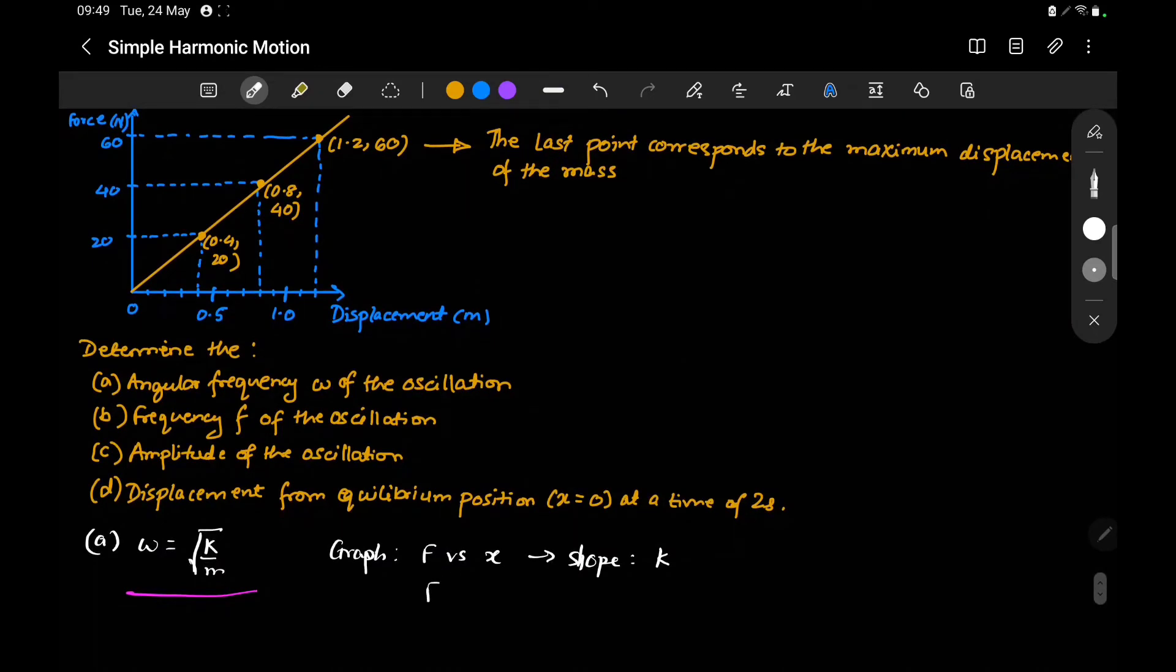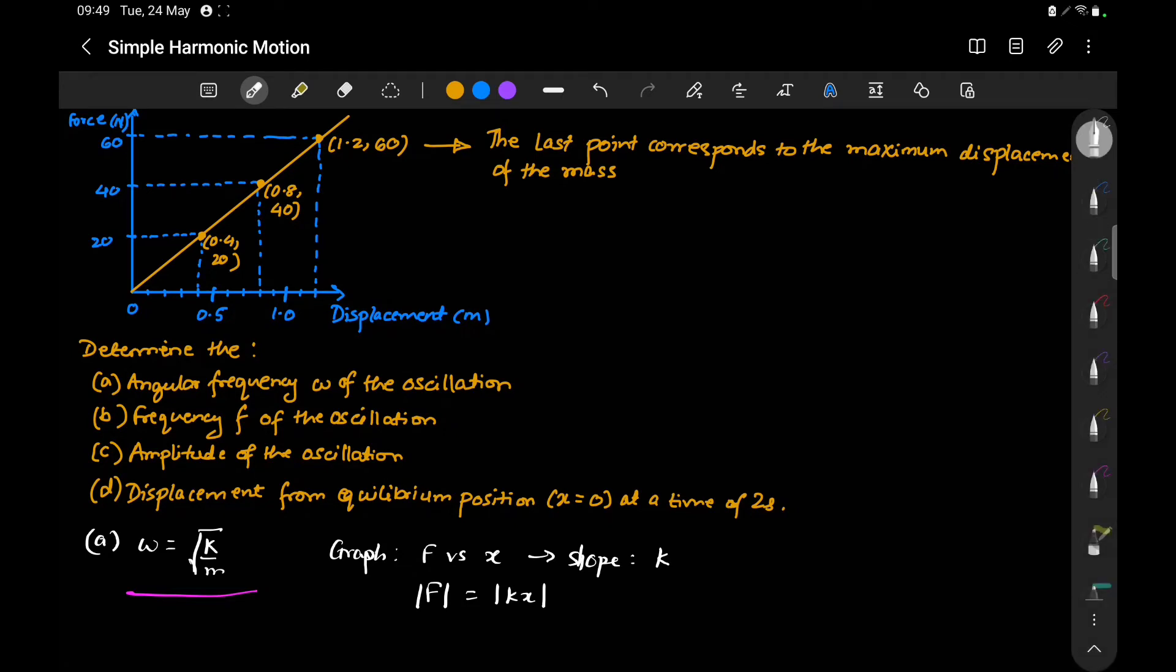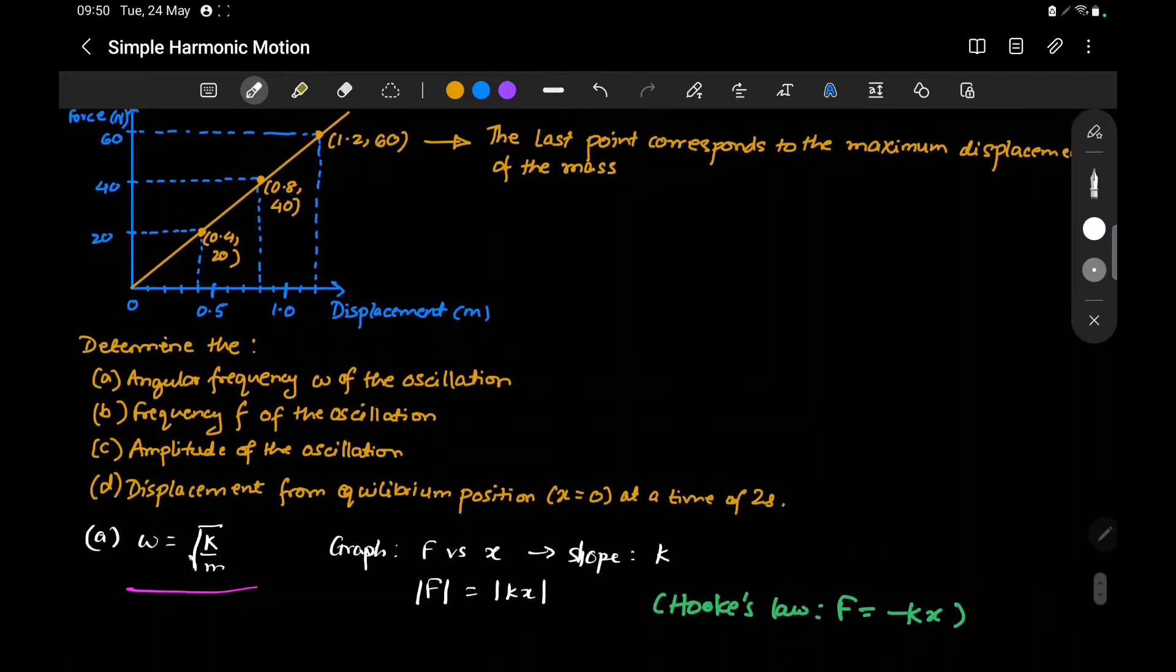Why? Because from Hooke's law, the restoring force is F = -kx. From Hooke's law, we know that the slope of this graph will give us k.